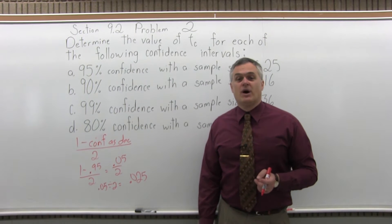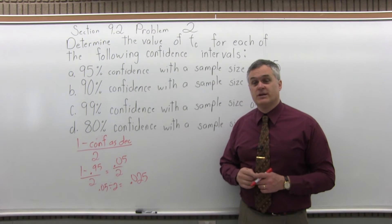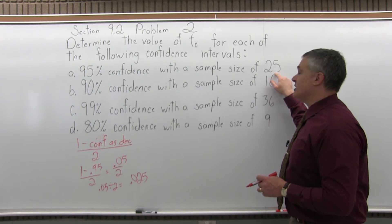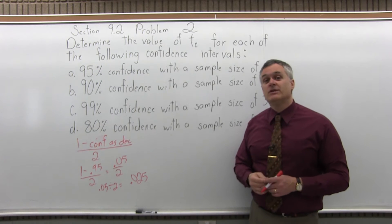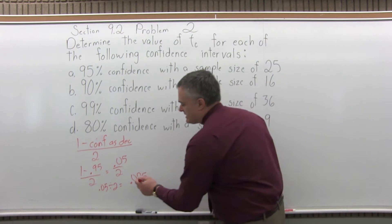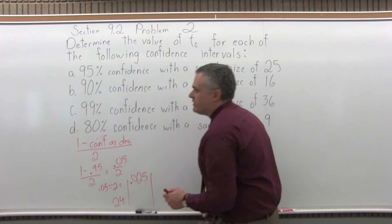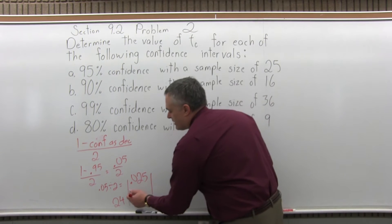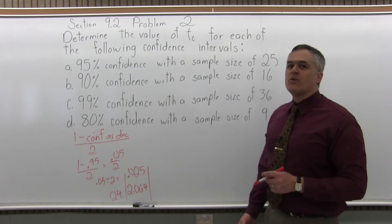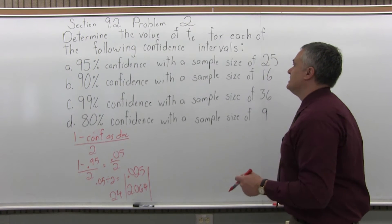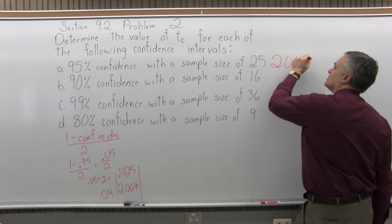Which row you want is determined by the sample size — that's the one that says DF, for degrees of freedom. You want one less than the sample size. So for part A, if the sample size is 25, you would need 24 degrees of freedom. Where the 0.025 column intersects with 24 degrees of freedom is 2.064. So for part A, T sub C equals 2.064.